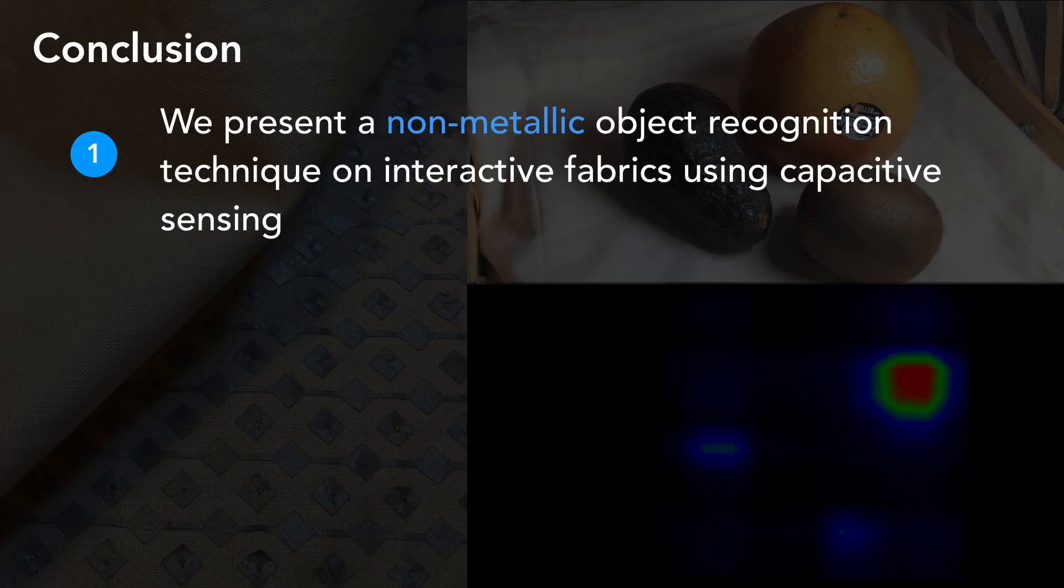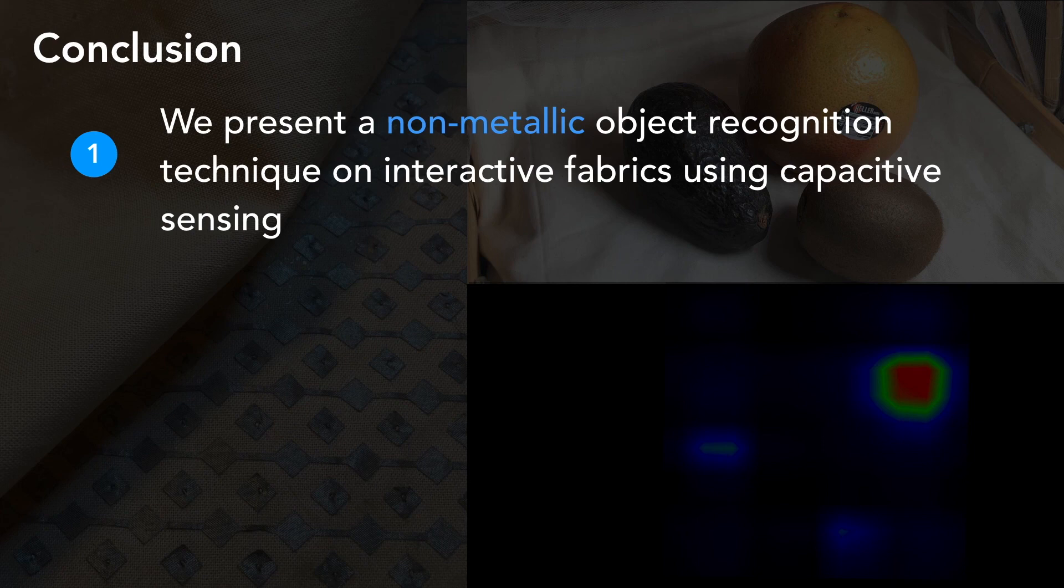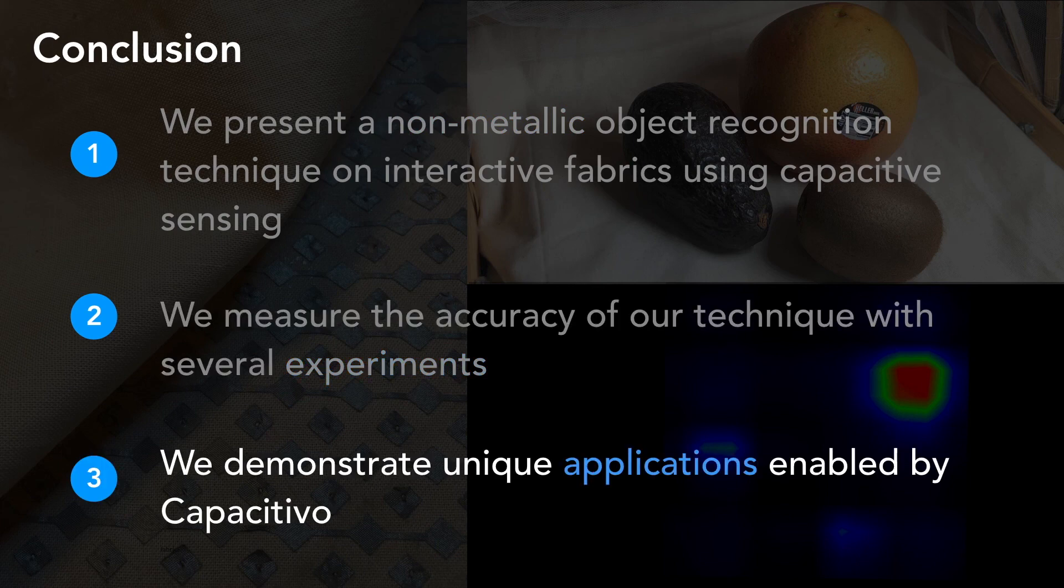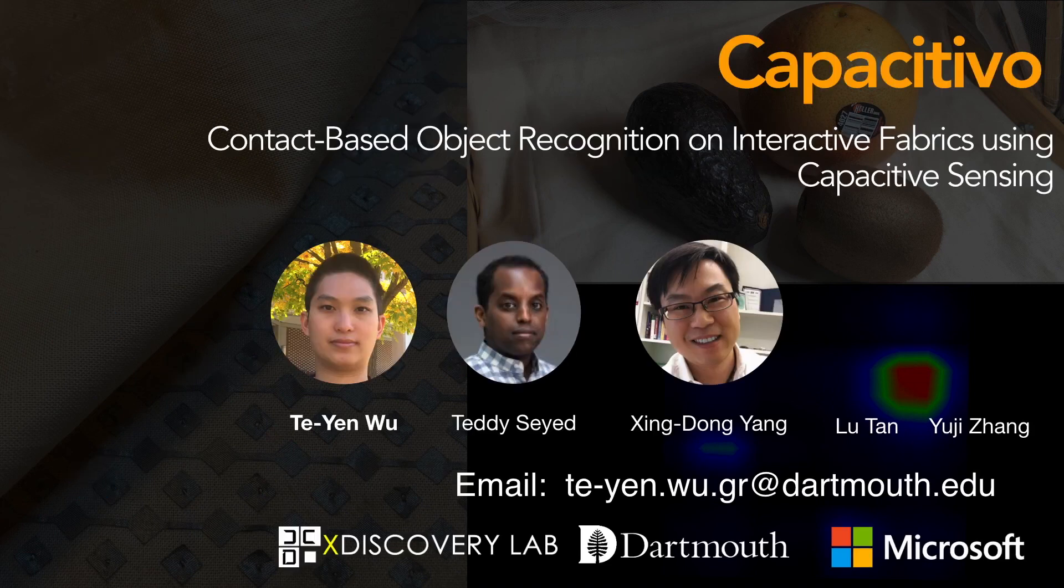With that, I would like to conclude our work with three key messages. First, we present a non-metallic object recognition technique on interactive fabric, using capacitive sensing. We measure the accuracy of our technique with several experiments. We demonstrate unique applications enabled by our sensing technique. Thank you for taking the time to listen. I am happy to take any questions now.